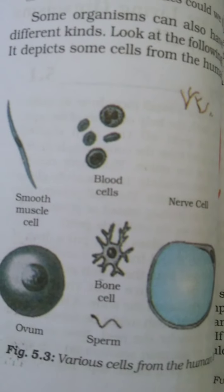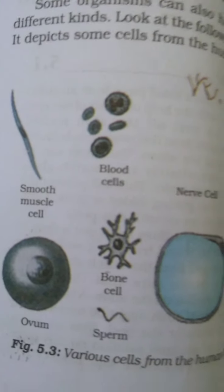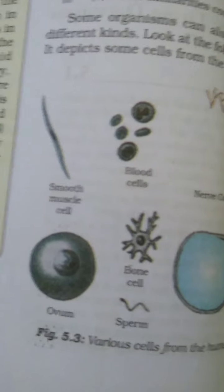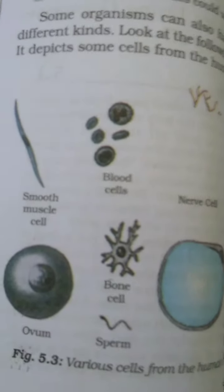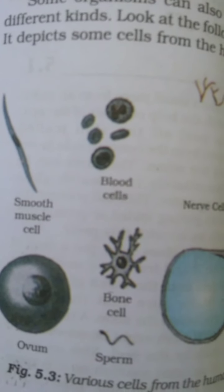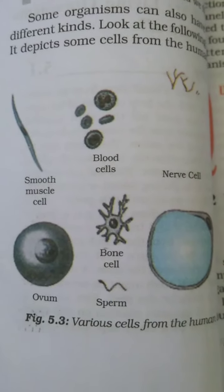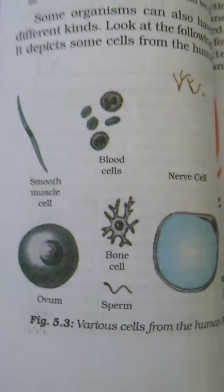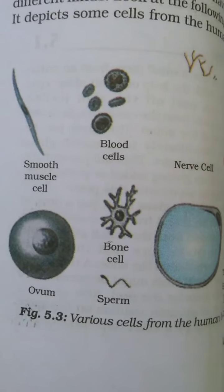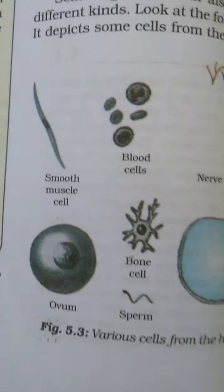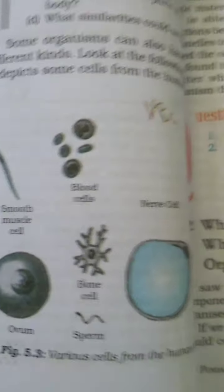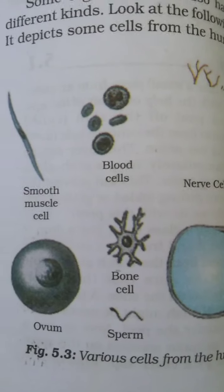Because of the organelles present inside the cell, all the activities can be done. These organelles together constitute a basic unit which is known as the cell. All the organelles in all cells are the same — no matter what their function is or what organism they are found in, all the organelles inside a cell are similar.